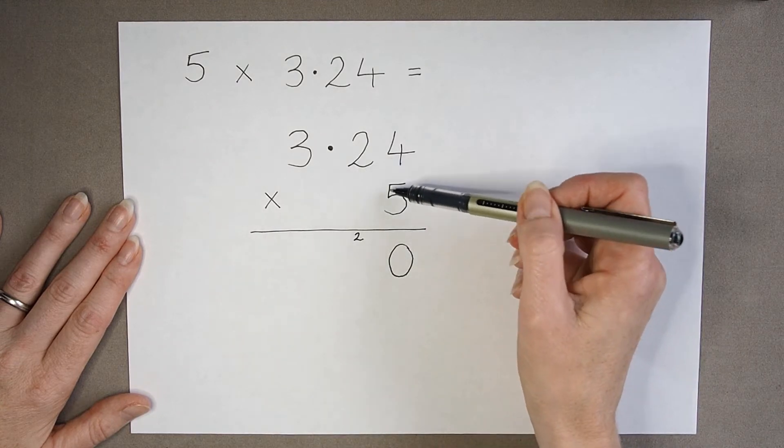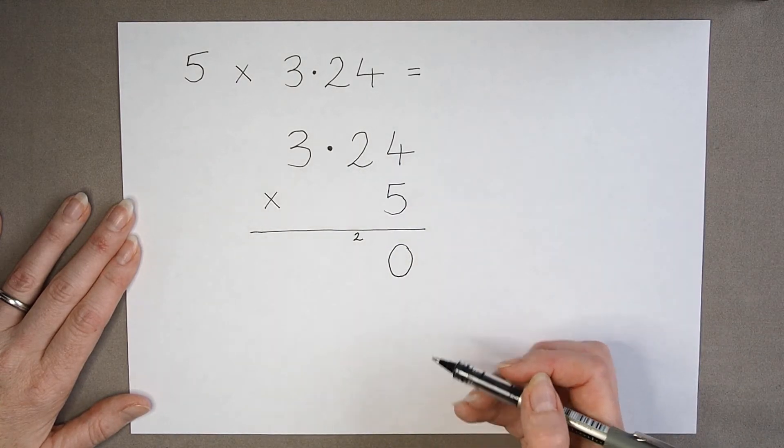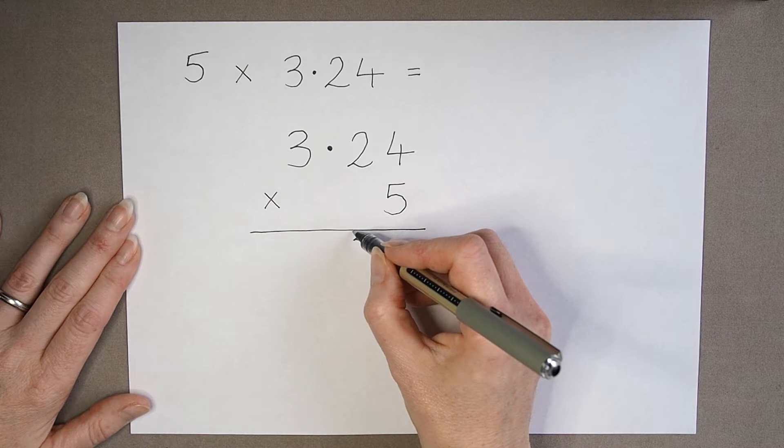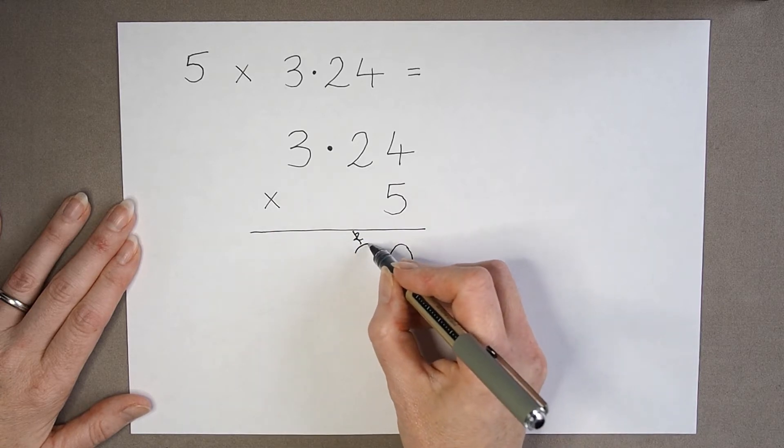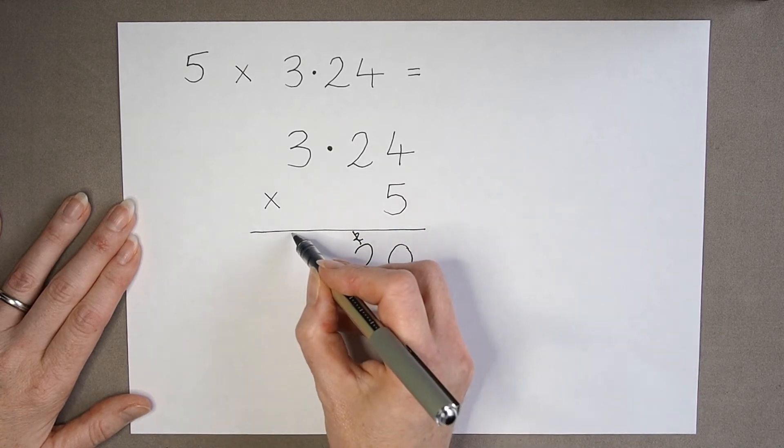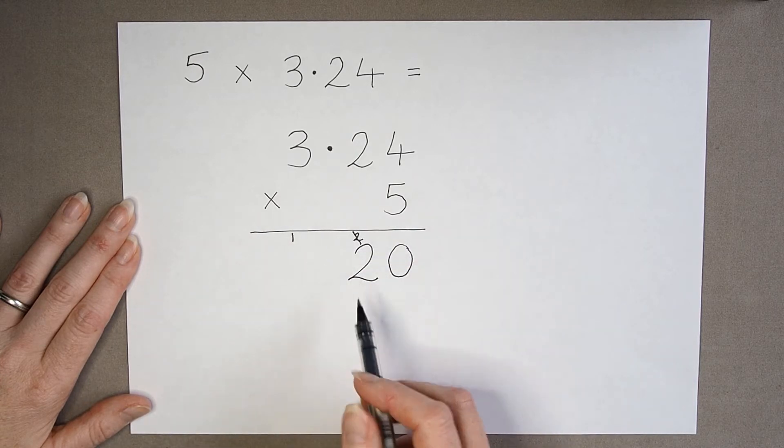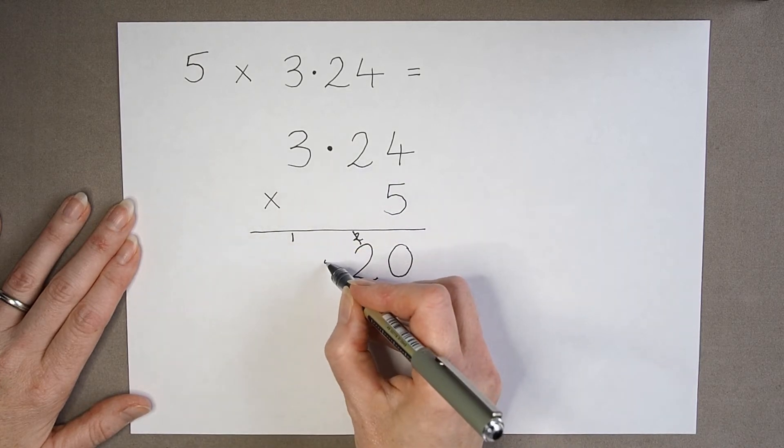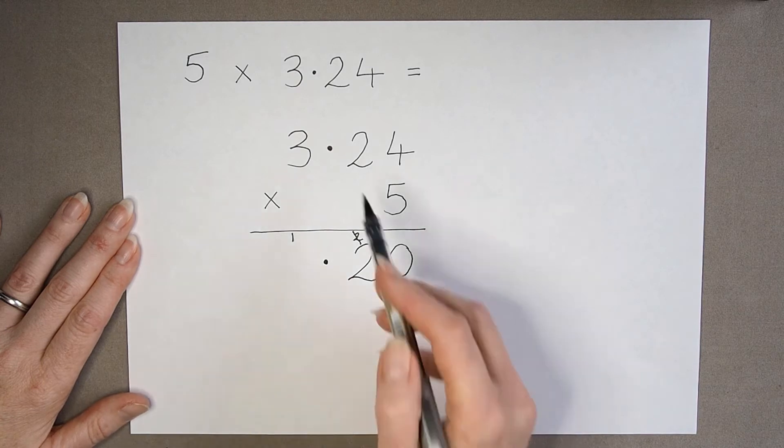And then moving on, 5 times 2 is 10. Add on 2 is 12. And there's my 12. But I know this time I've got my decimal point here.